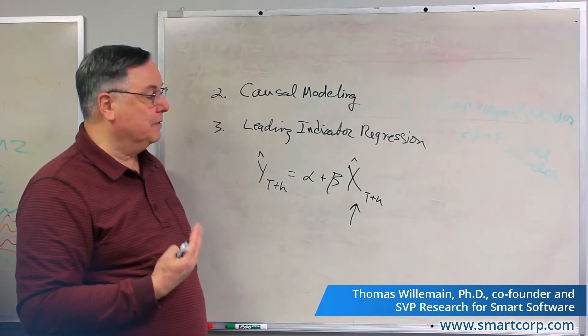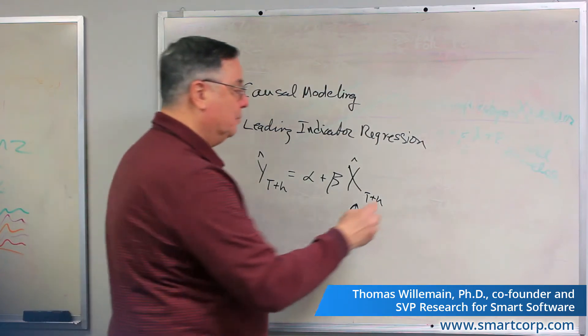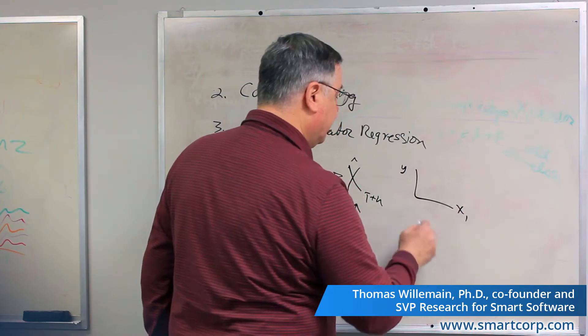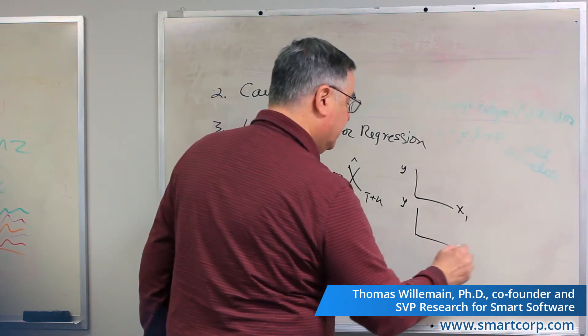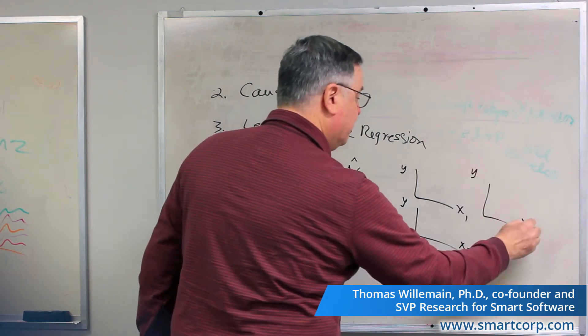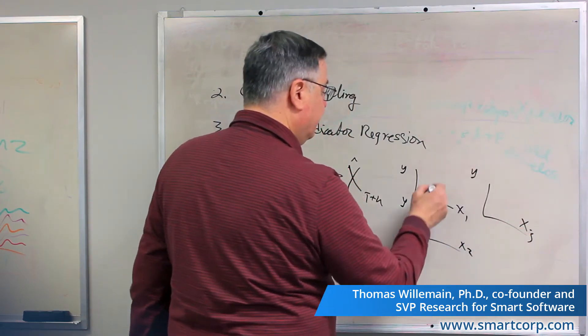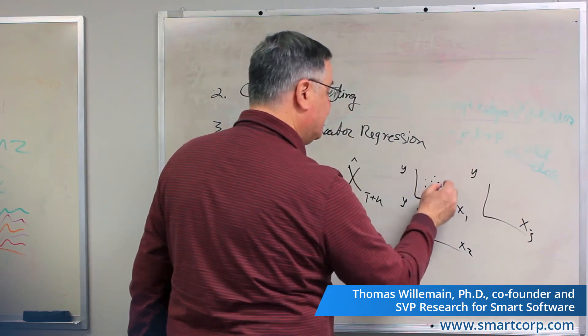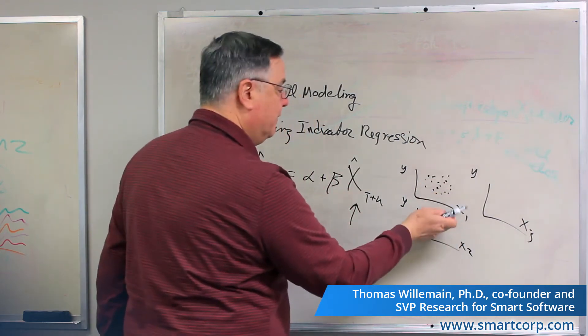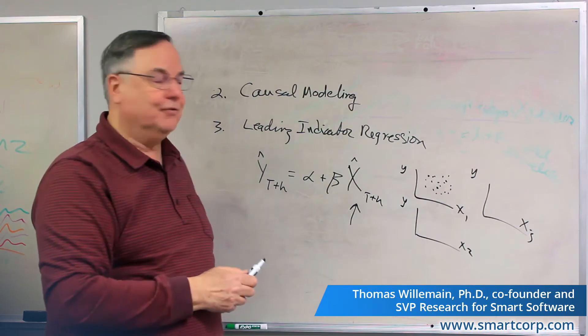But you could look at them one at a time and make a scatter plot of y against, say, the first possible x, and y against the second possible x, and y against the third possible x. And if you see something that looks like this, you're out of luck. That x doesn't have any leverage to forecast y, so that's a bad one.